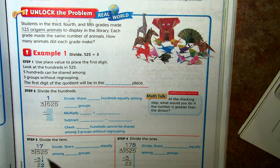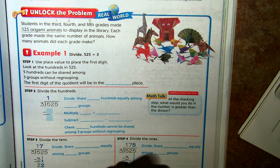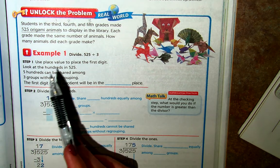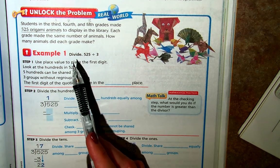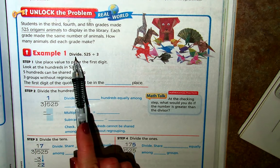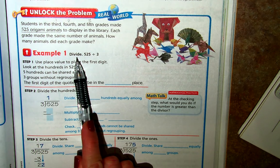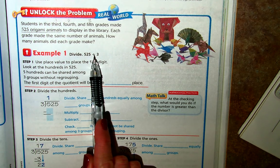So our question is how many animals did each grade make, and so our problem as we write it out becomes that we have to divide 525 divided by three.